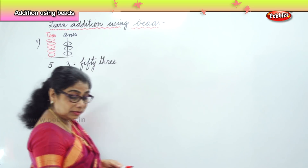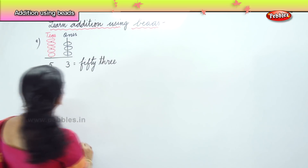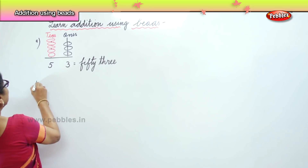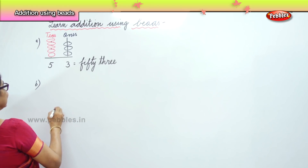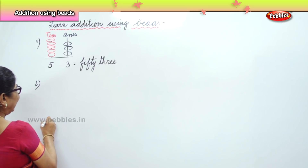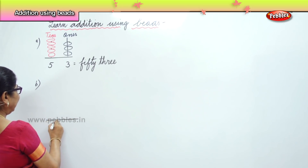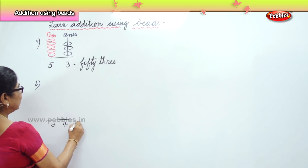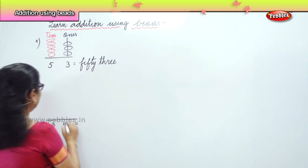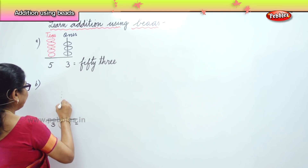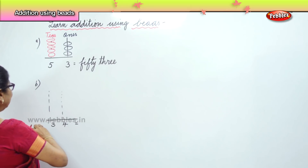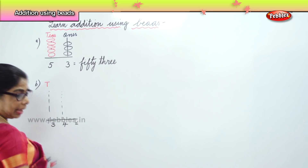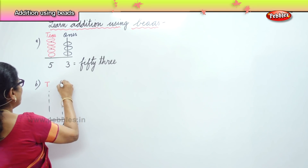What do we have? We have 53. Now, let's do another one to make us understand this number — adding using beads. Now I have here, I say, 34. In 34, for tens I will write T, and for ones I will write O.